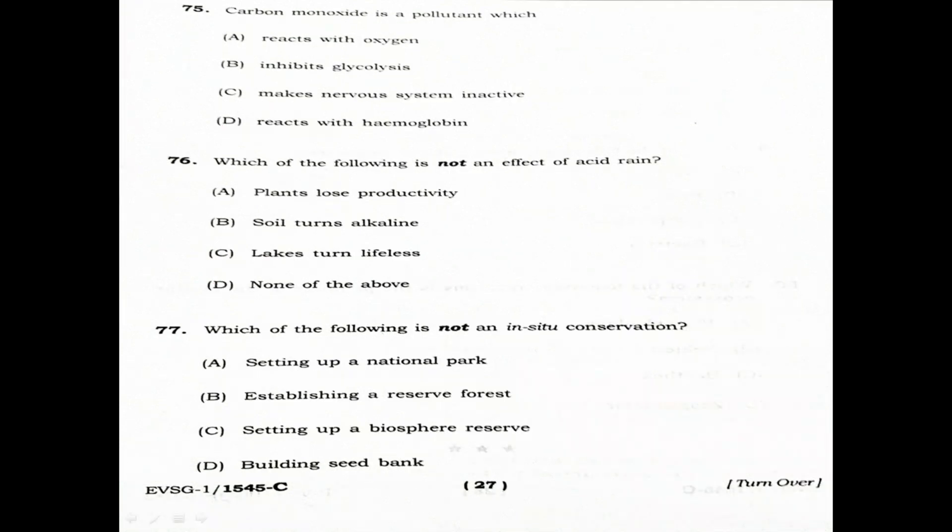Carbon monoxide is a pollutant which. Option A: Reacts with oxygen. Option B: Inhibits glycolysis. Option C: Makes the nervous system inactive. Option D: Reacts with hemoglobin. Carbon monoxide reacts with hemoglobin — that is the correct answer.